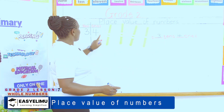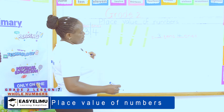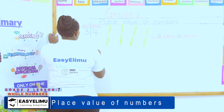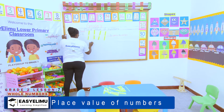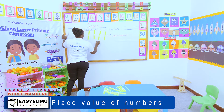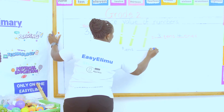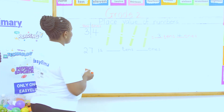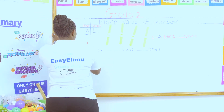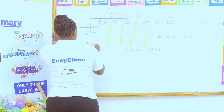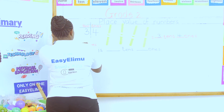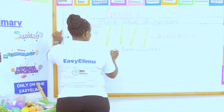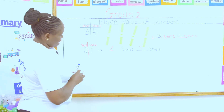That gives us the number 34 — that is finding the position of numbers. What if you have been given a number like 27? 27 is how many tens and how many ones? We divide the number using the place value chart, so how many tens and how many ones do we have? I have seven ones and two tens.